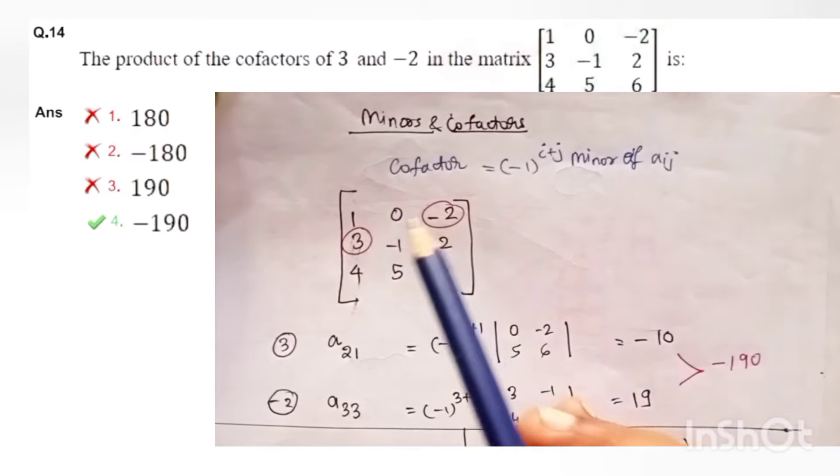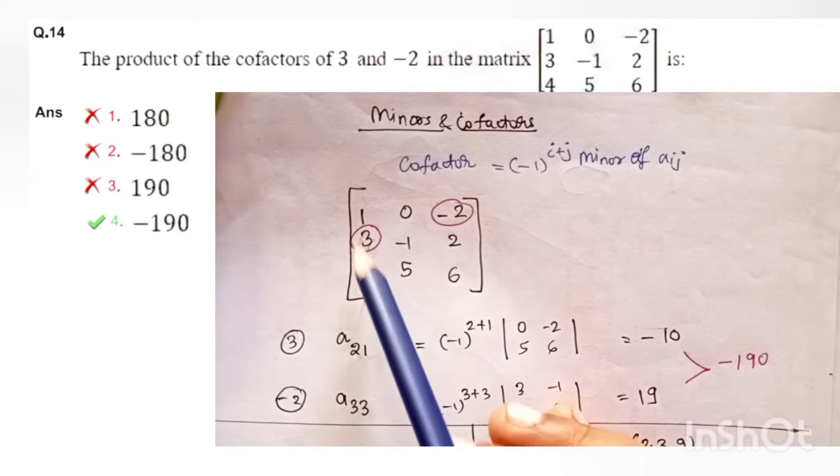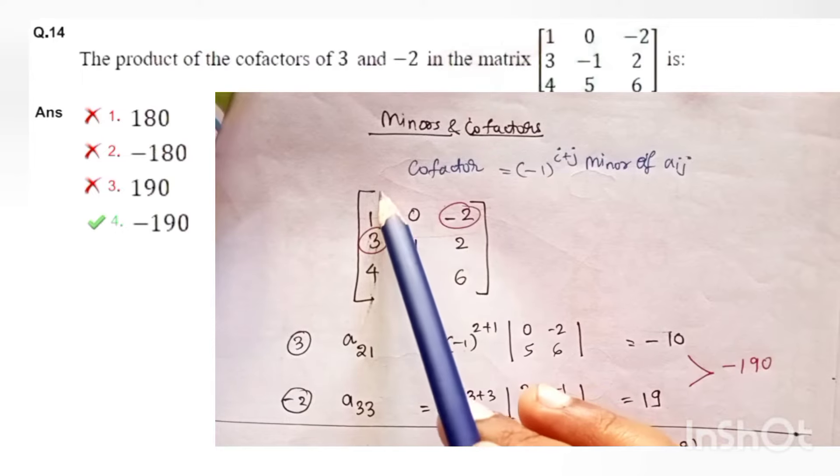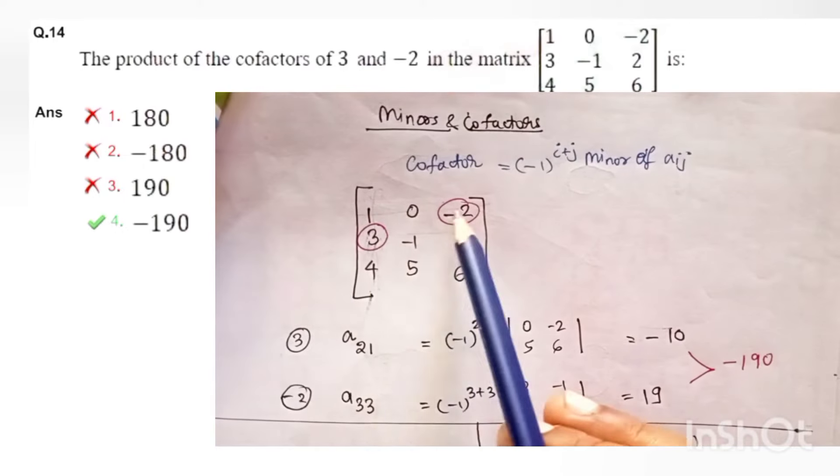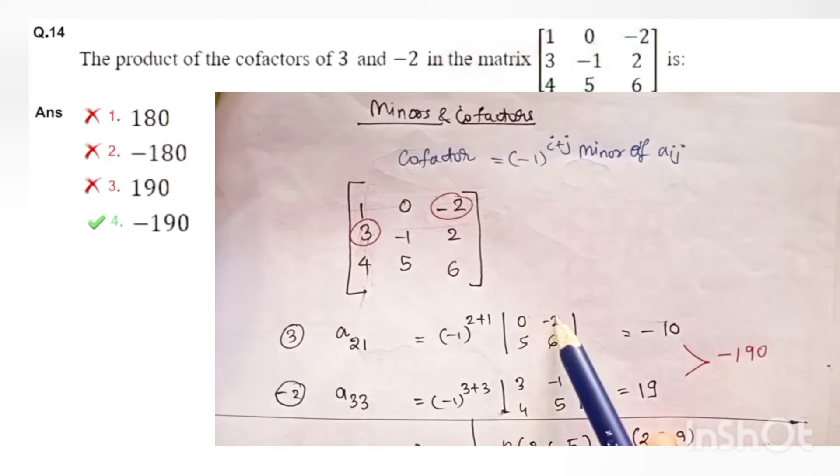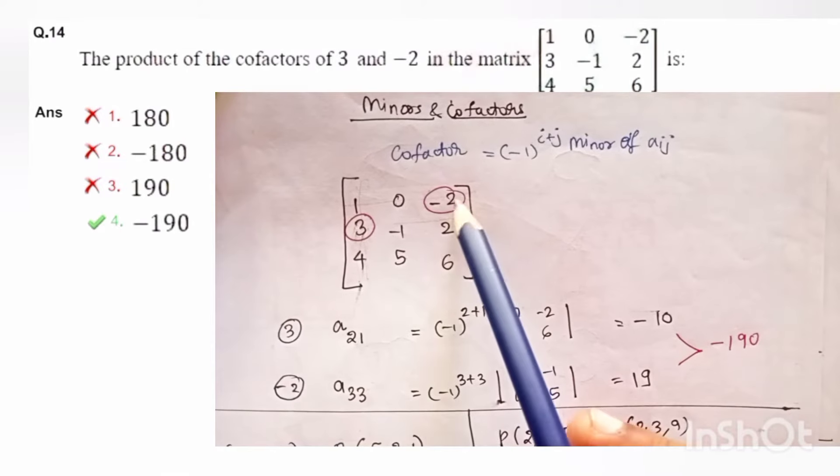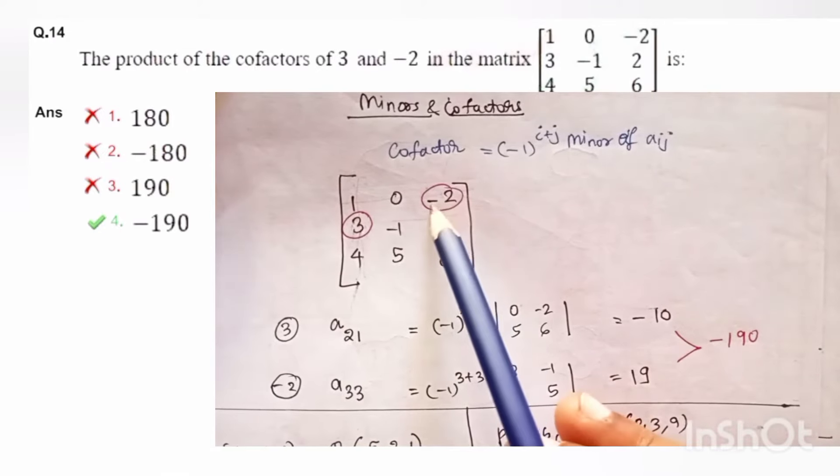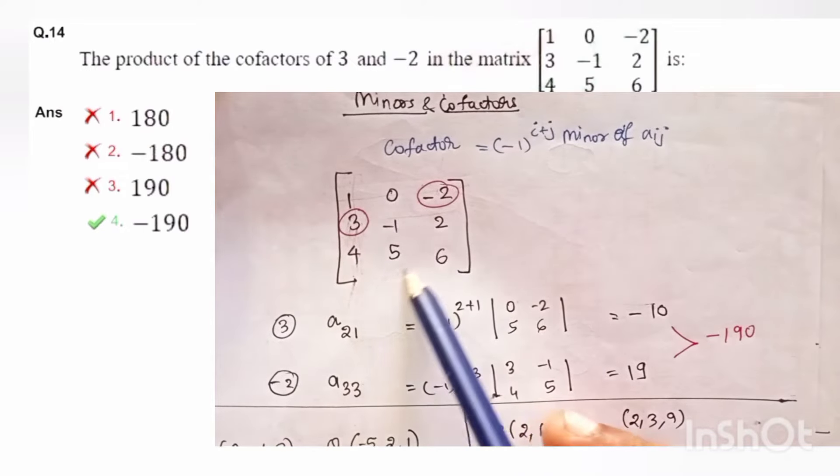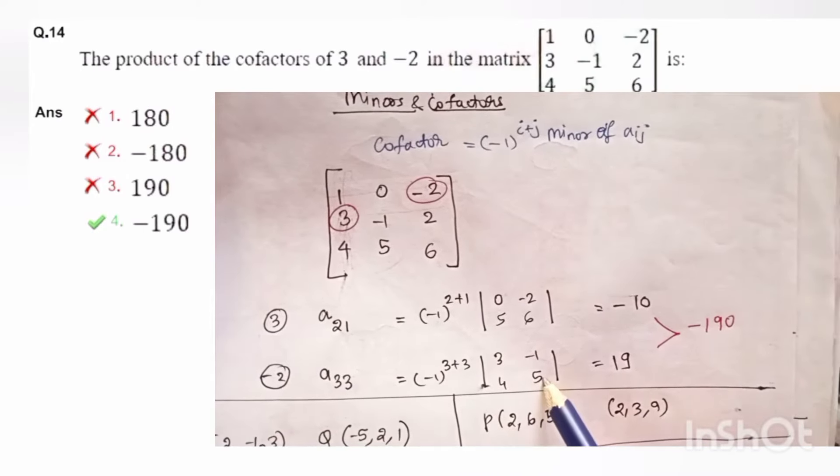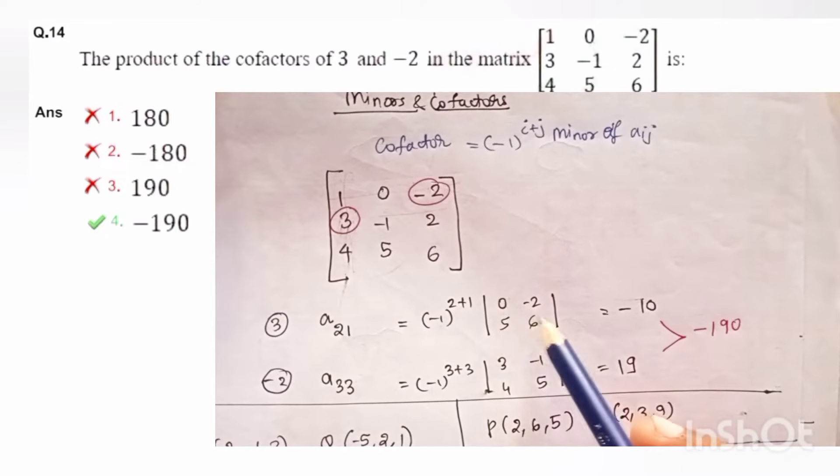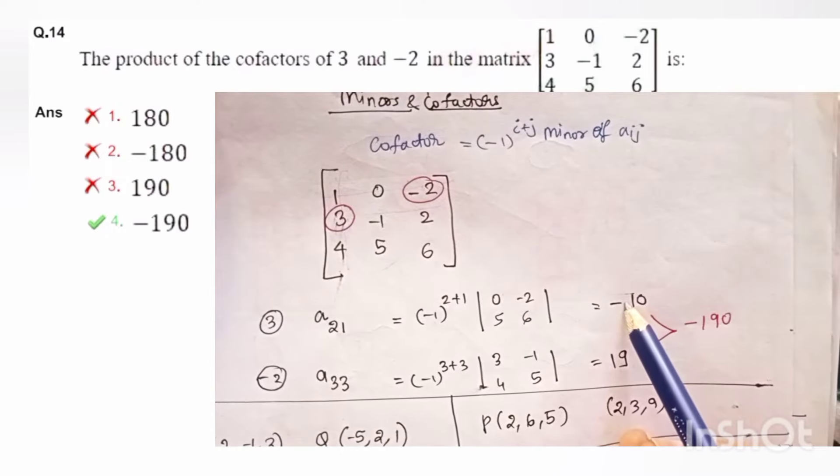Now let us come back to the question. Here for 3 what will be the determinant? You have to exclude that row and the column. So you have to write 0, minus 2, 5 and 6. Similarly for minus 2, minus 2 is actually A33. So accordingly determinant comes out to be 3, minus 1, 4 and 5. Then you substitute in the formula and simplify.